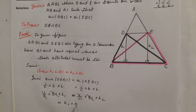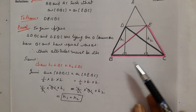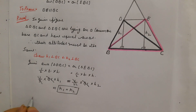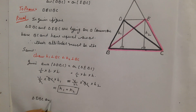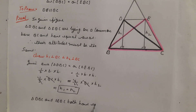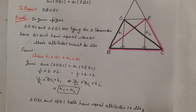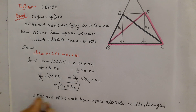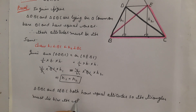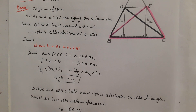This gives us H1 equals H2. So the heights of both triangles are equal — for example, both are 5 cm. Since triangles DBC and EBC both have equal altitudes and lie on the same base BC, they must lie between the same parallels. Therefore DE is parallel to BC.